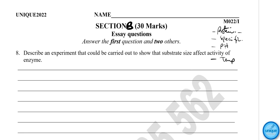Other properties include that enzymes act as catalysts — they speed up the rate of reaction — and their reactivity depends on the size of the substrate. All these properties are relevant to the experiment we are about to describe.